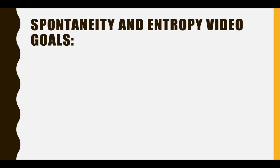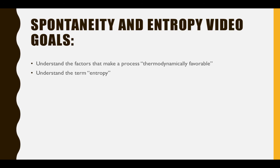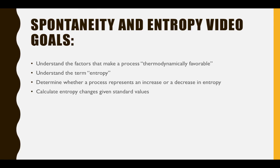That brings us to the end of this video. Let's review our goals. First, we looked at the factors that make a process thermodynamically favorable — these are a negative enthalpy change and a positive entropy change. Then we looked at the term entropy. Then we learned how to determine whether a process represents an increase or a decrease in entropy. And finally, we learned to calculate entropy changes given standard values.